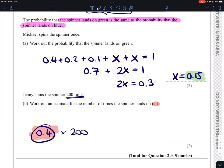So if there's a 0.4 chance of it happening once, then there'll be a 0.4 times 200 chance of it happening over the course of 200 spins. If we do that, we end up with 80 as our answer.